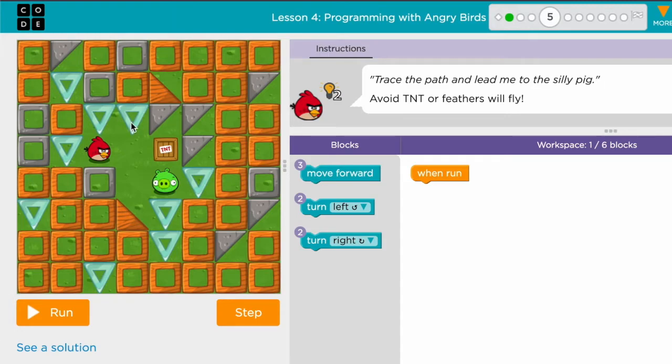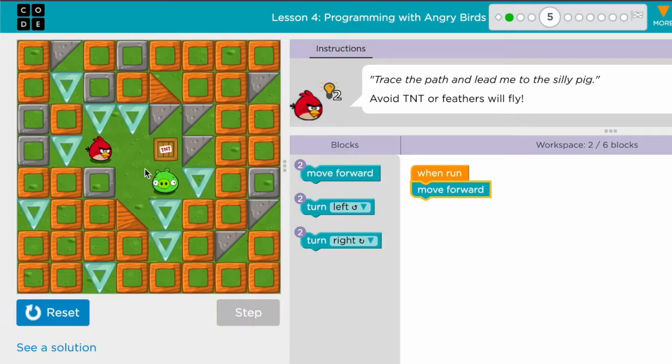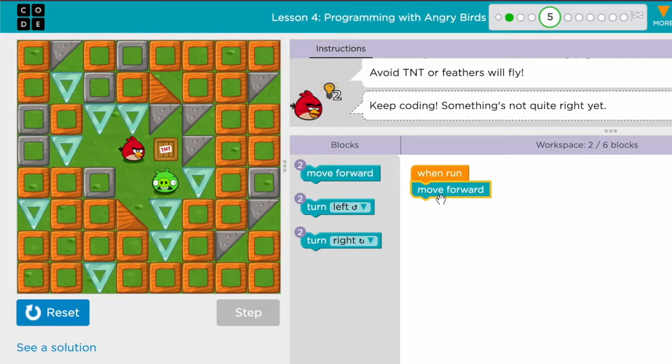In this level the angry bird needs to move one step forward according to this block, so this is one step, and then it has to turn. In order to turn, I need to figure out which direction. First I'm going to click step and it's going to do it. It is lighting right here, which tells me that it made this step.